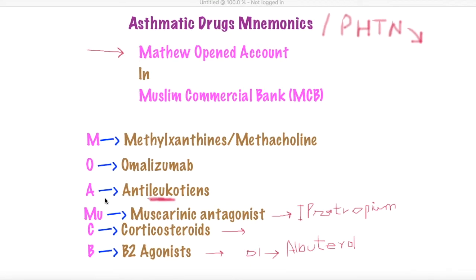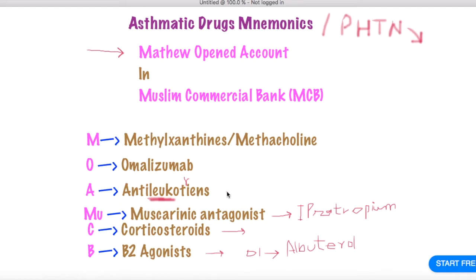Then 'account' stands for A, which represents leukotriene modifiers. There are about three or four drugs in this class, but you can always identify them because they contain 'luk' or 'cast' — for example, montelukast or zafirlukast. They always have 'luk' or something similar.